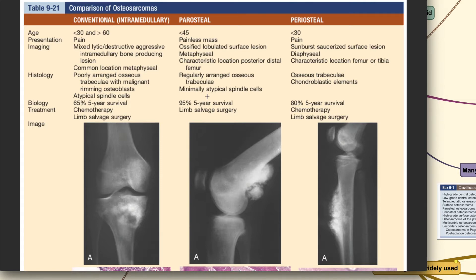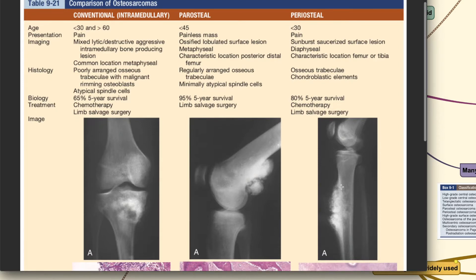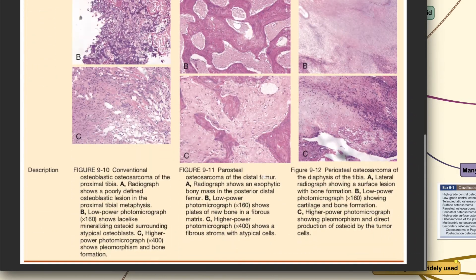When you evaluate other subtypes of osteosarcoma such as the periosteal or parosteal, for the periosteal you could see that they are basically coming out of the periosteum — the lesion looks like it is growing from the periosteal surface of the bones. For the parosteal type, you could see that the lesion seems to be stuck on the surface of the bone, and it has a very specific location especially at the posterior distal femur.